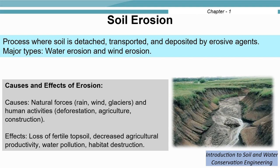Let us have an overview of some topics you will learn in this course. Soil erosion is a process where soil is detached, transported, and deposited by erosive agents. The major types are water erosion and wind erosion. Natural causes include rain, wind, and glaciers, while human activities causing erosion include deforestation, agriculture, and construction. The main effects are loss of fertile topsoil, which results in decreased agricultural productivity, along with water pollution and habitat destruction.